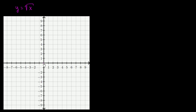When x is 0, y is going to be equal to 0. When x is 1, the principal root of 1 is positive 1. When x is 4, the principal root of 4 is 2. When x is 9, the principal root of 9 is 3. So the graph is going to look something like that — that's my best attempt at graphing it.